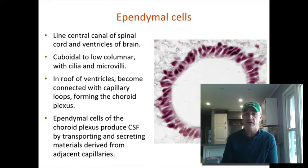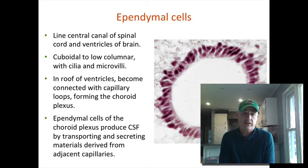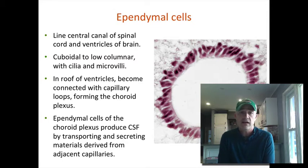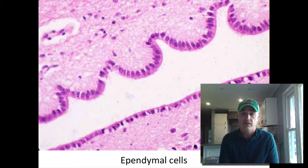Ependymal cells are another central nervous system type. These are ciliated cells that line a lot of the cavities in the brain and spinal cord. There are some specialized ones in what is called the third ventricle of the brain where there is an absence of a blood-brain barrier. These cells are called the choroid plexus, and those cells are what produce cerebral spinal fluid, or CSF. CSF is a blood filtrate that provides nutrients to the nervous tissue, and the ependymal cells, by having those cilia, help to move it around to different areas of the brain and spinal cord.